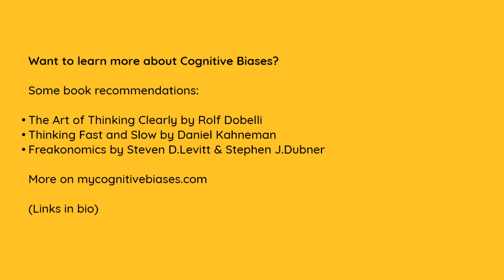Want to learn more about cognitive biases? Some book recommendations: The Art of Thinking Clearly by Rolf Dobelli, Thinking Fast and Slow by Daniel Kahneman, and Freakonomics by Stephen D. Levitt and Stephen J. Dubner. More on MyCognitiveBiases.com.